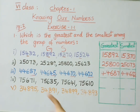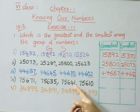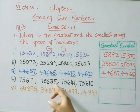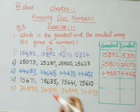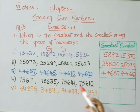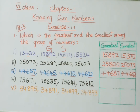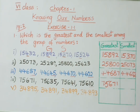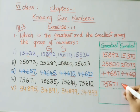See the fourth sum: 75,671, 75,635, 75,641, and 75,610. The first three digits are the same. Let us compare the last two digits: 71, 35, 41, and 10. The greatest is 71, therefore 75,671 is the greatest. Among the remaining — 35, 41, and 10 — the least is 10, therefore 75,610 is the smallest number.